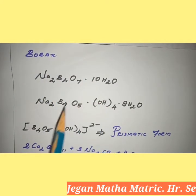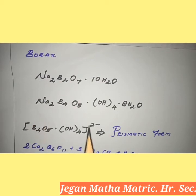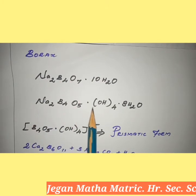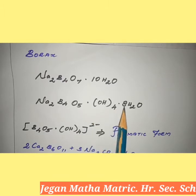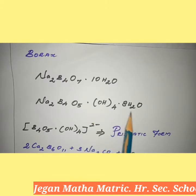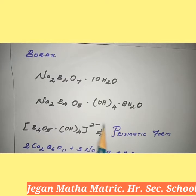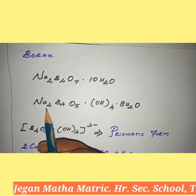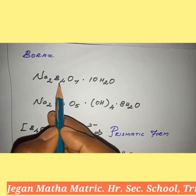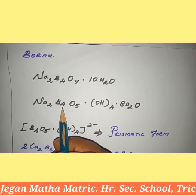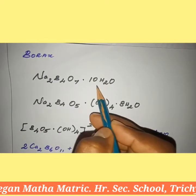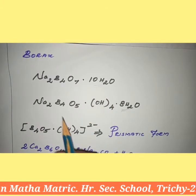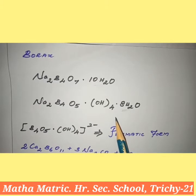But based on the structure, we can also write it as Na₂B₄O₅(OH)₄·8H₂O. Both are the same. Here Na is 2 times in both formulas, and B is 4 times. Here there are 10 water molecules, but in the second form there are 8 water molecules. The difference is 2 water molecules.